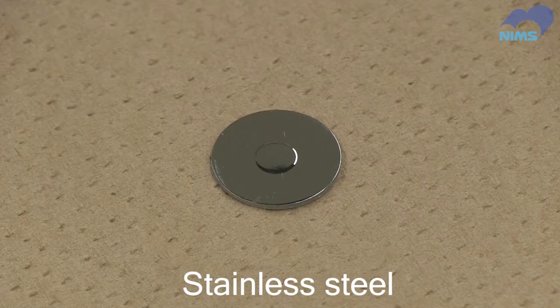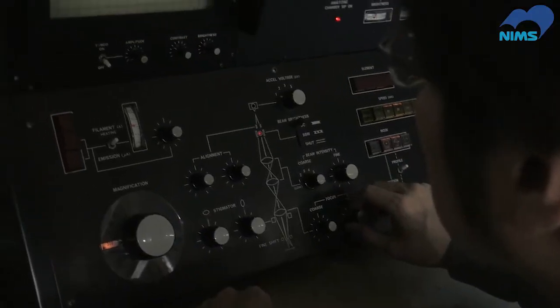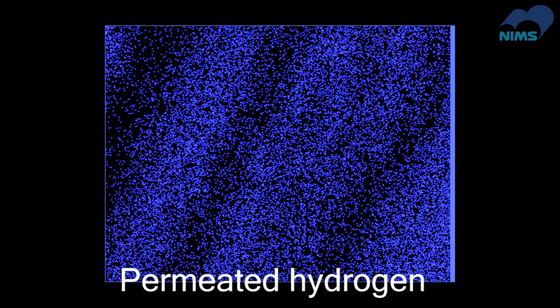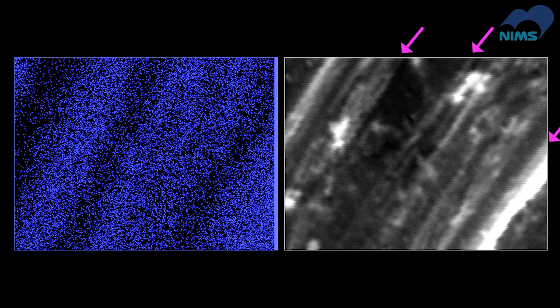Let's take a look at this stainless steel sample. Hydrogen gas is fed to the sample permeating it. Hydrogen appears unevenly over the surface. When we compare it with the corresponding real image from the microscope, the striped pattern of the metal's microstructures closely matches the places where hydrogen was detected.